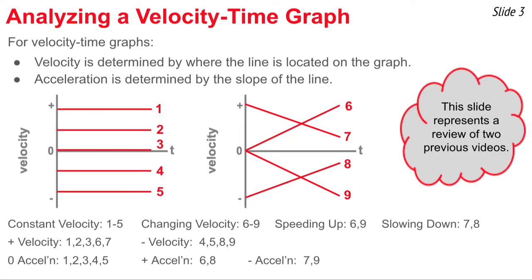Lines 1 through 5, over on the left graph, are horizontal lines that have zero slope. And since the slope represents the acceleration, they have zero acceleration — they're the constant velocity objects. Whereas lines 6 and 8 have a positive slope, and as such they have a positive acceleration. Lines 7 and 9 have negative slope and therefore a negative acceleration.